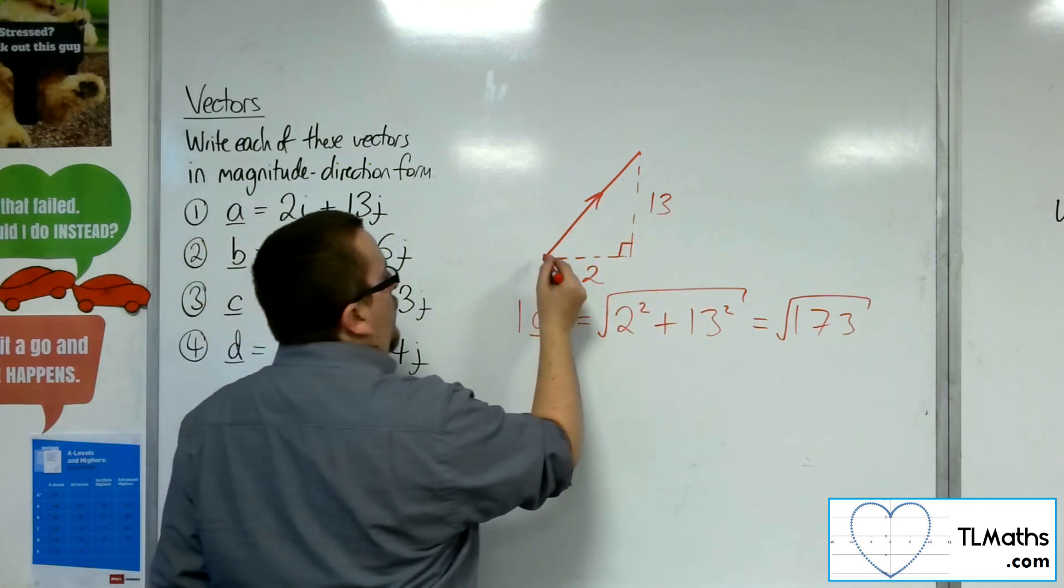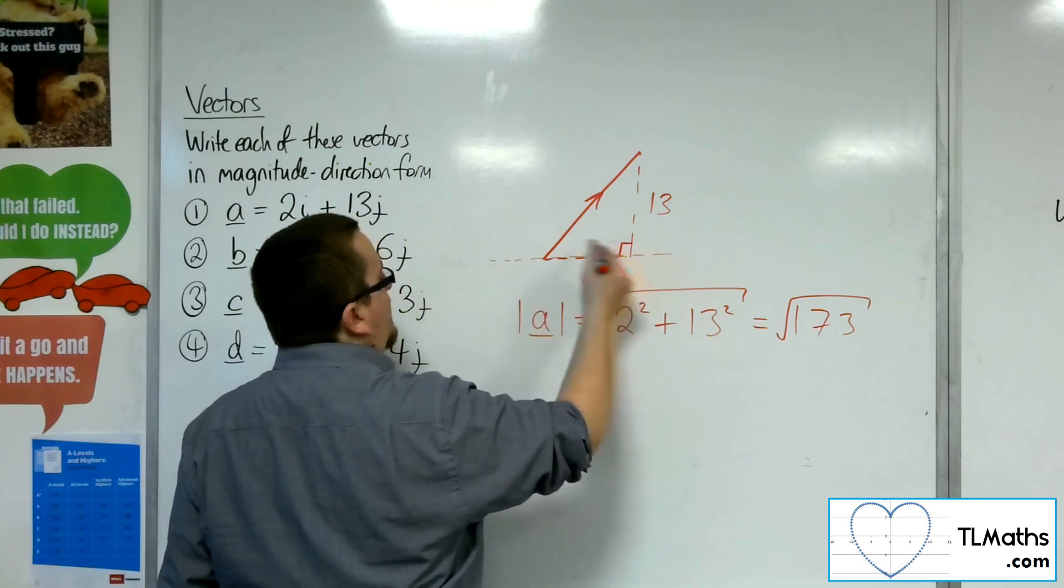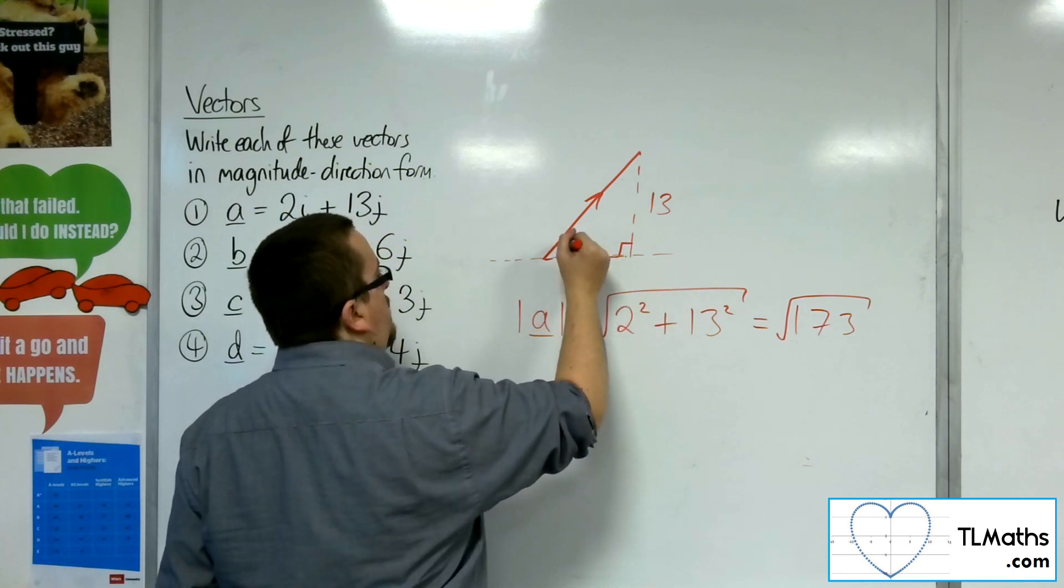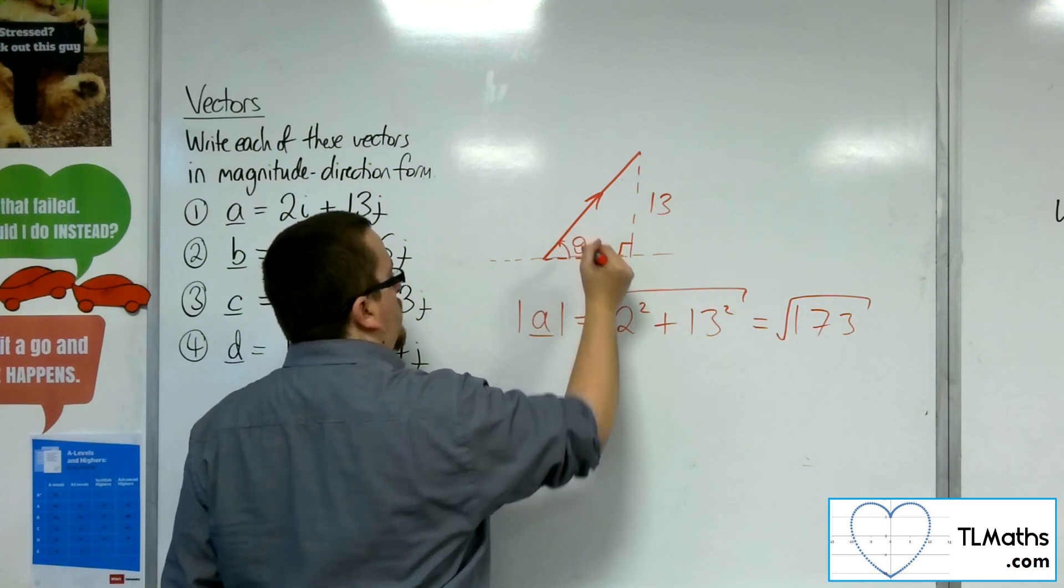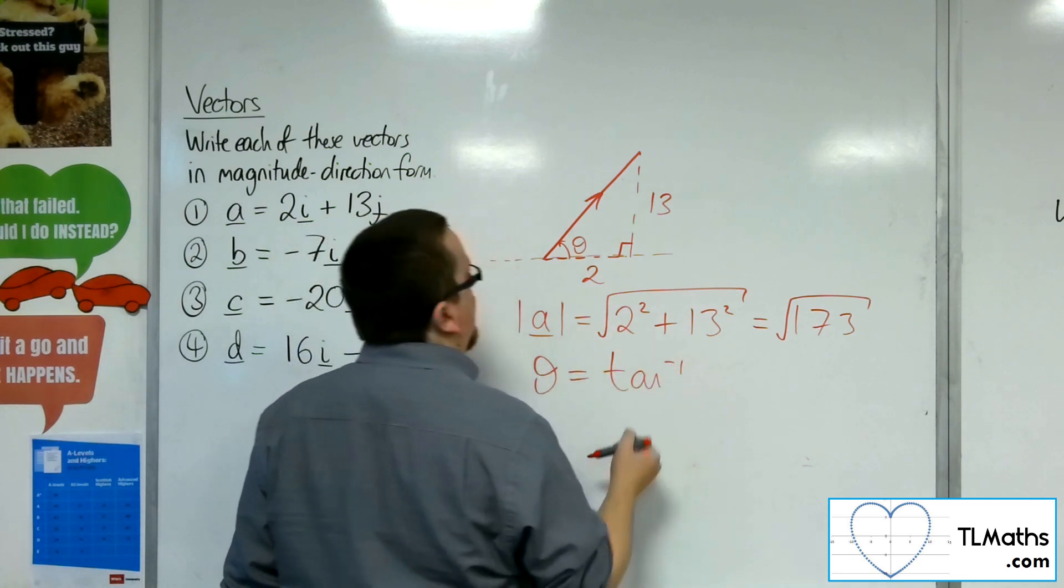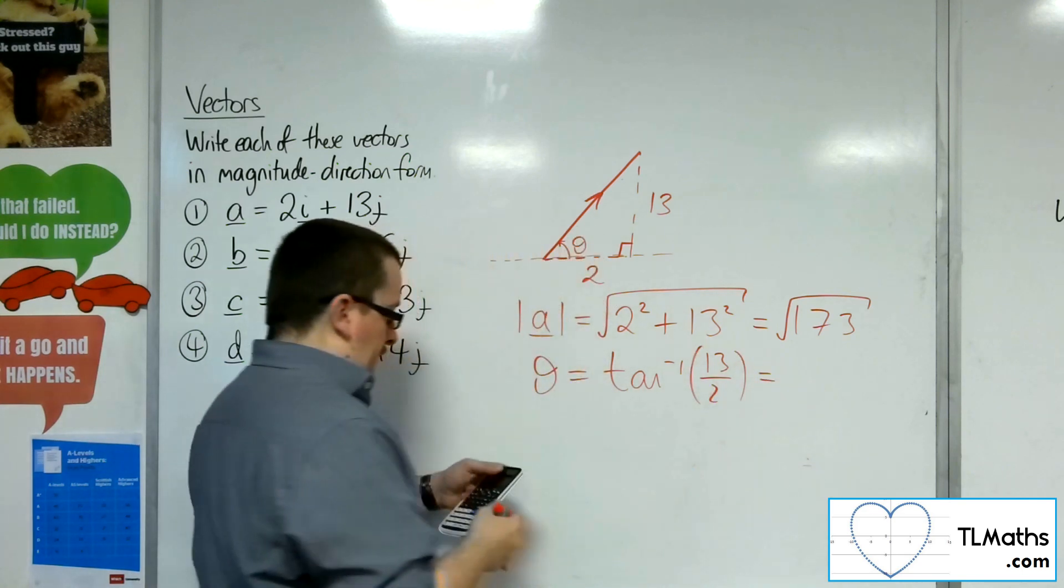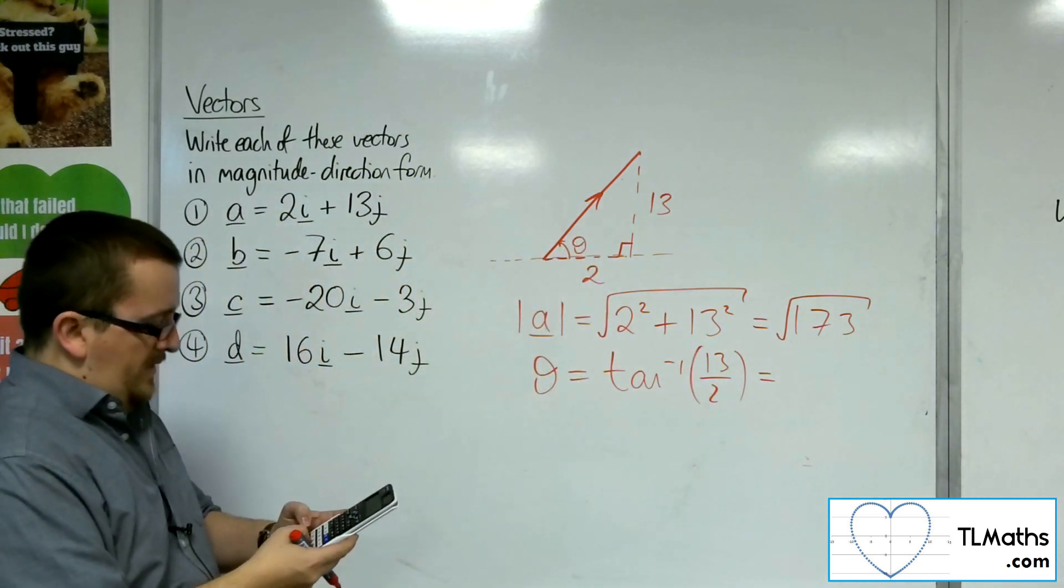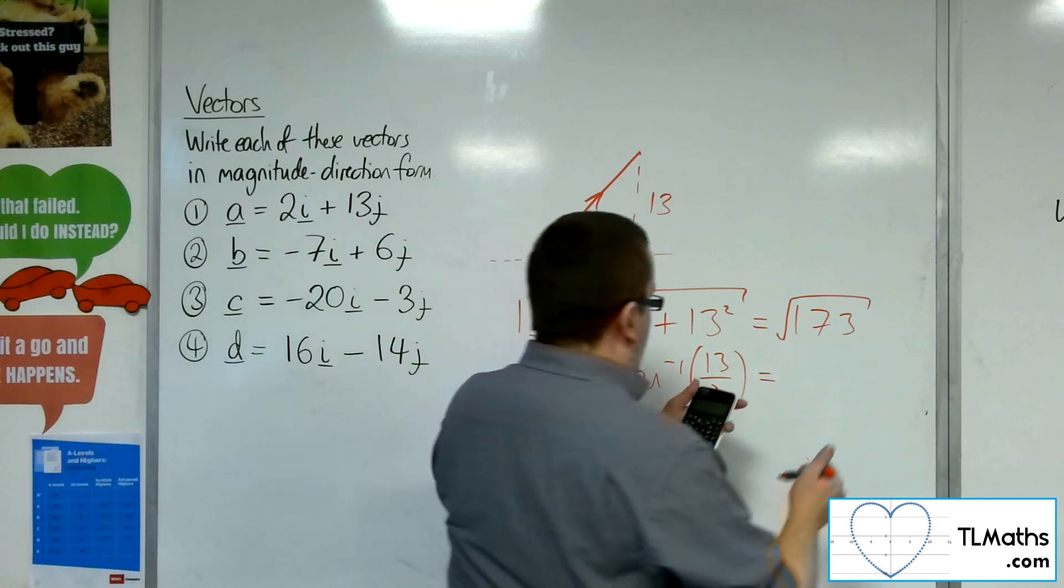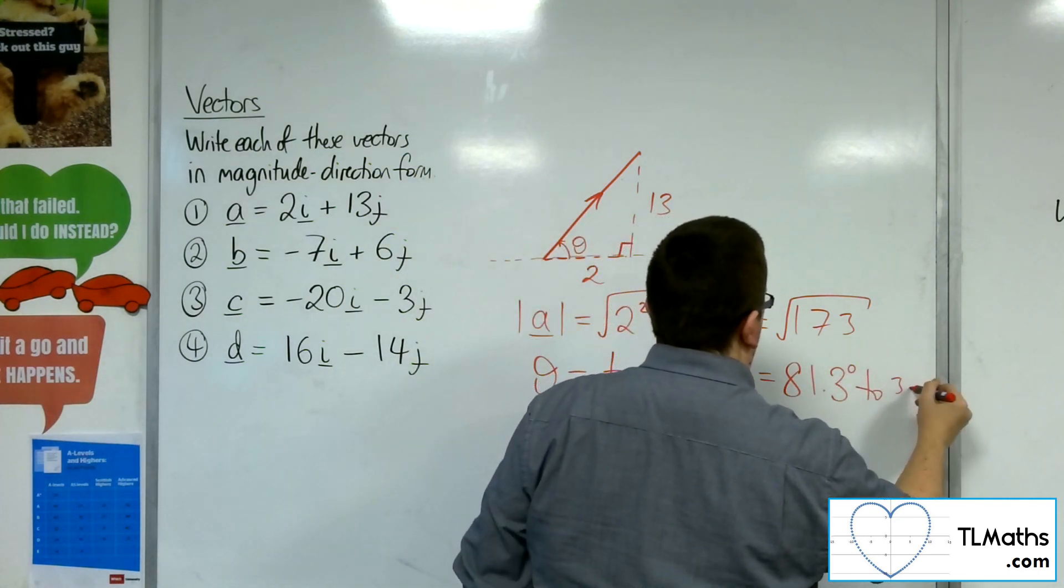And the angle that this will make with the positive x-axis, well, with the x-axis, is that angle there. So let's call that theta. Then theta is the inverse tan of opposite over adjacent. So the inverse tan of 13 over 2 is 81.3 degrees to 3 sig fig.